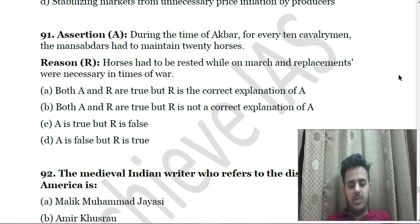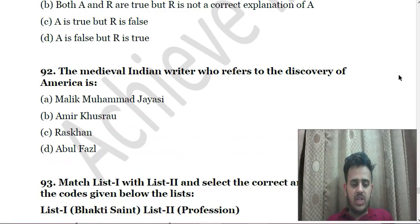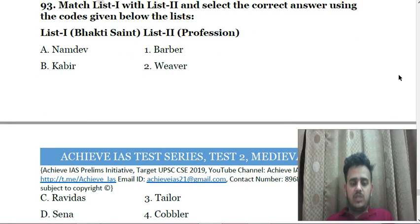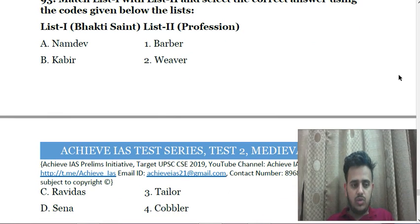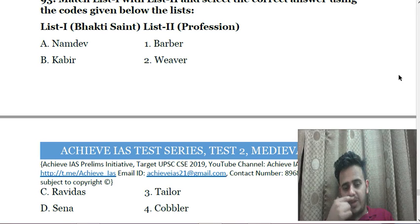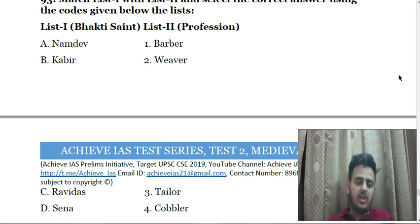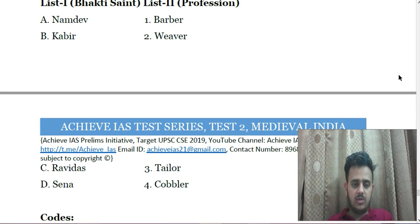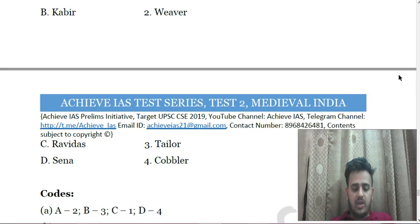Next: During the time of Akbar, for even 10 cavalrymen the mansabdars had to maintain 20 horses — the next day's horses had to be rested, and violent marches and replacements were necessary in times of war. Next: The medieval Indian writer who refers to the discovery of America is — A. Malik Muhammad Jayasi, B. Amir Khusro, C. Rush Khan, D. Abul Fazl. Next: Match List 1 and List 2 — List 1: Name of Bhakti saints: A. Namdev, B. Kabir, C. Ravidas, D. Sena. List 2: Professions: Barber, Weaver, Tailor, Cobbler.